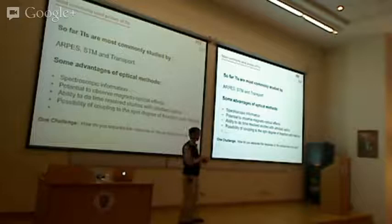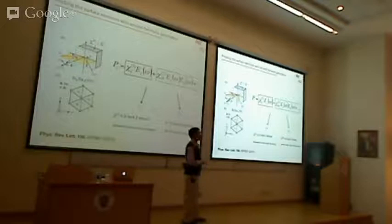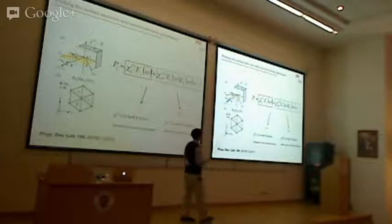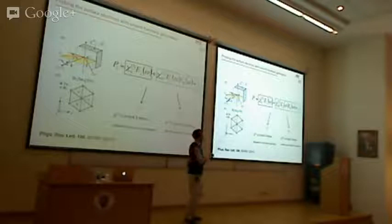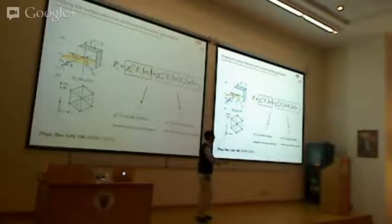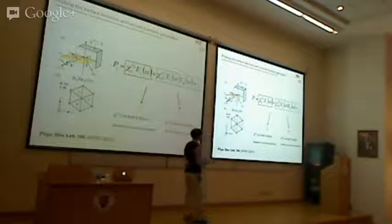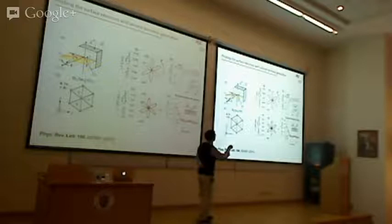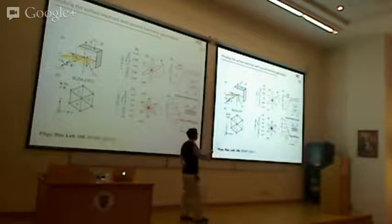We realized that second harmonic generation — shining light at frequency ω and detecting light at 2ω — vanishes from the bulk of crystals with inversion symmetry, from symmetry arguments. However, at the surface, inversion symmetry is necessarily broken, so 2ω light comes only from the surface. This allows us to directly study the surface of a topological insulator. When you rotate the crystal and measure the 2ω signal, it directly maps the surface band structure of the crystal.